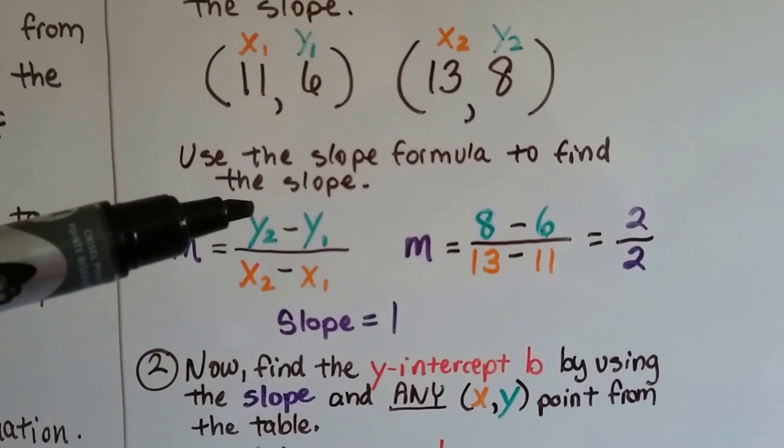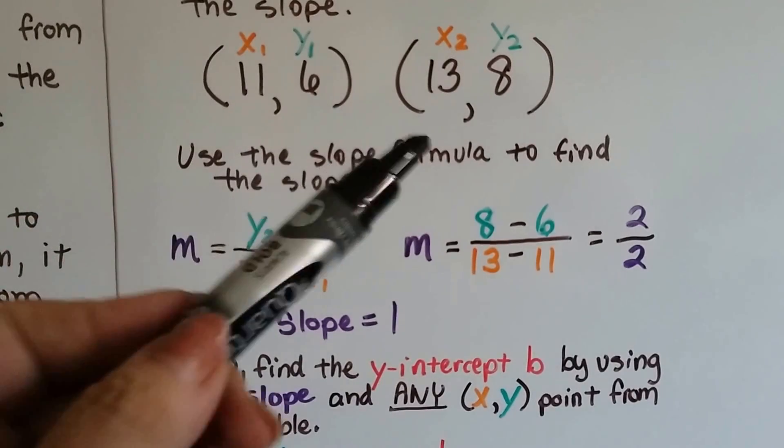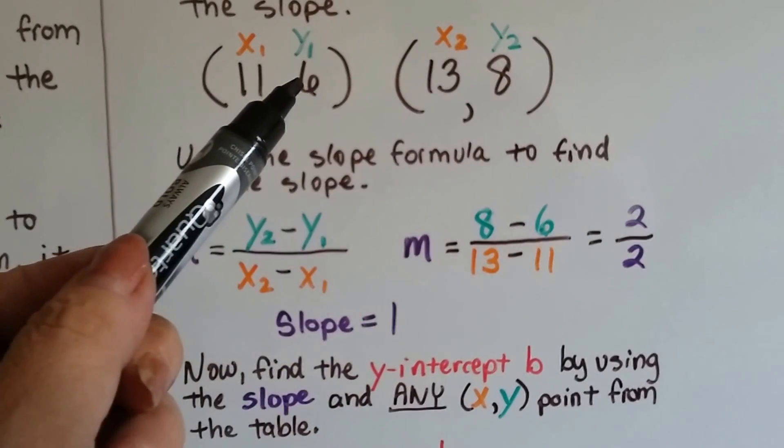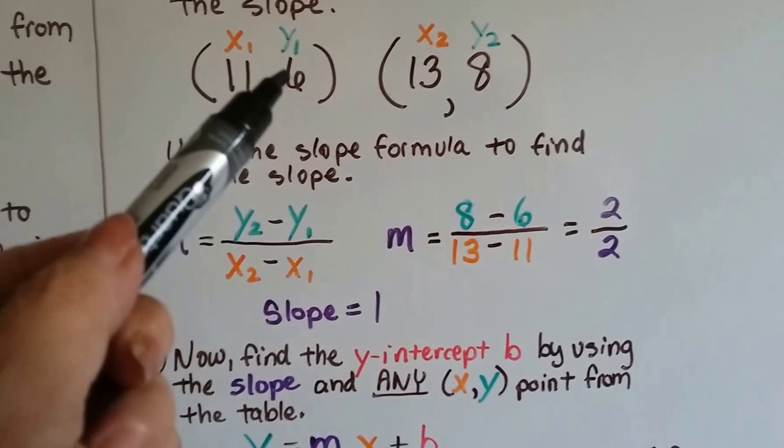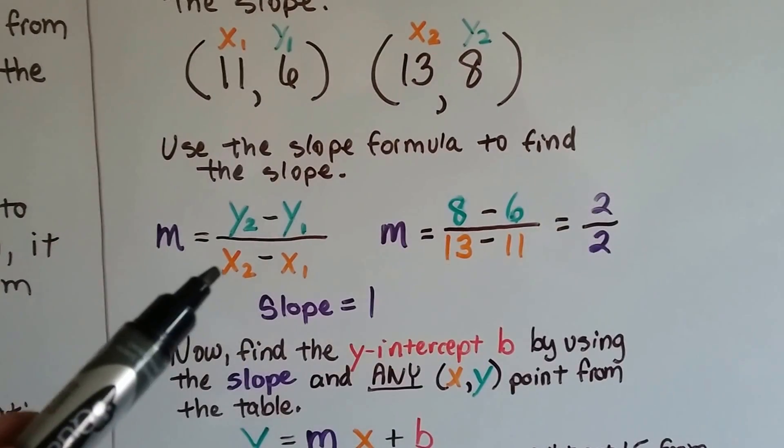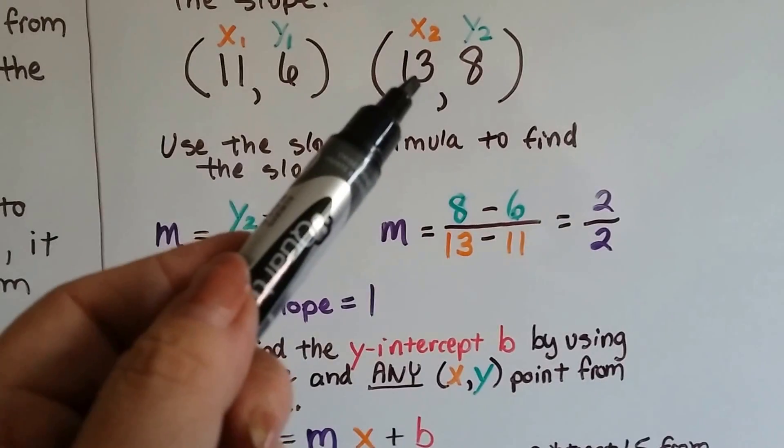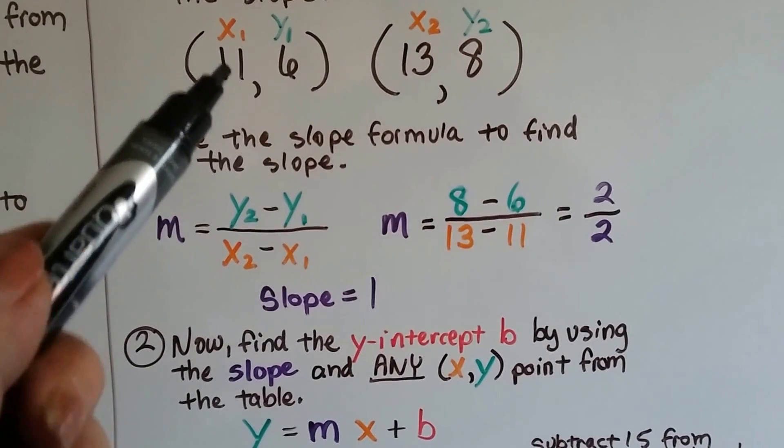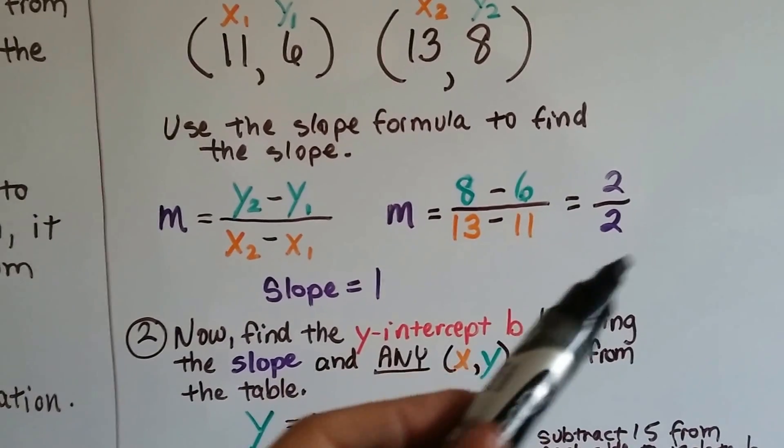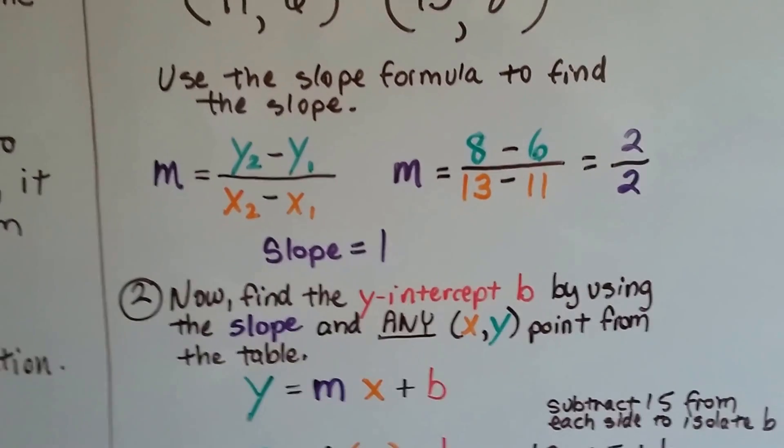So we have our y2 minus y1, so that would be 8 minus 6. y2 minus y1, 8 minus 6 is 2. Then we have x2 minus x1. That would be 13 minus 11. 13 minus 11 is 2. Well, 2 over 2 is 1, so we know our slope is 1.